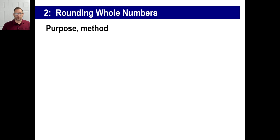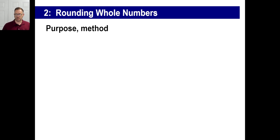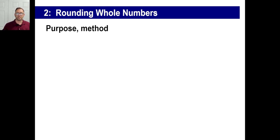Rounding numbers — what do we mean by that? Well, if you're at the grocery store, it's handy not to try to keep all the exact prices in your head. Like, seven dollars and 53 cents for this, eight dollars and 12 cents for that cereal, three dollars and 78 cents for the goat milk. It's way easier to round these numbers off and make an estimate of how much money you need.